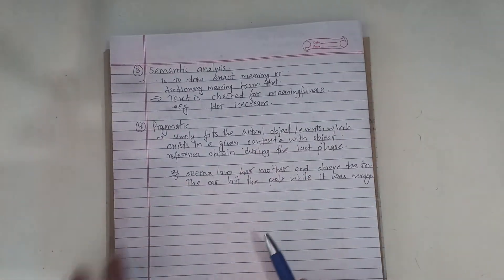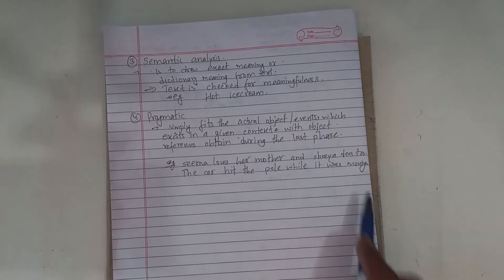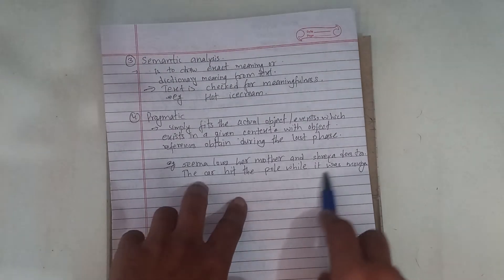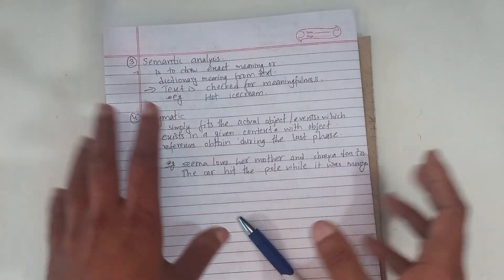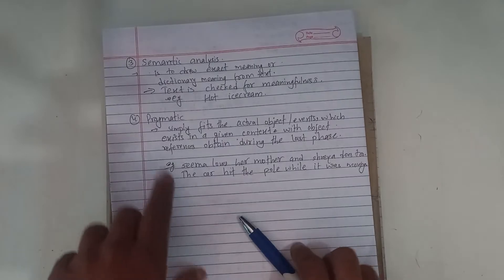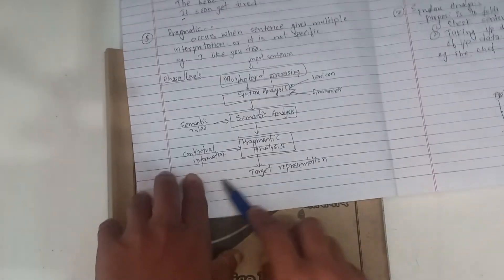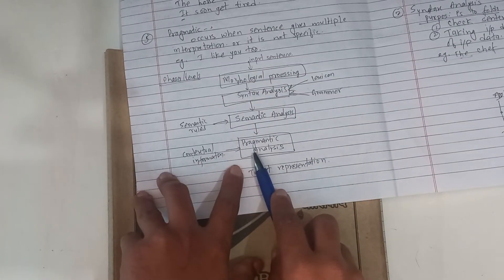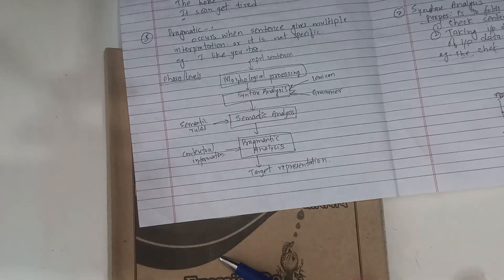For example, in pragmatic analysis: 'The car hit the pole while it was moving.' We need to determine what 'it' refers to in context. Thank you.